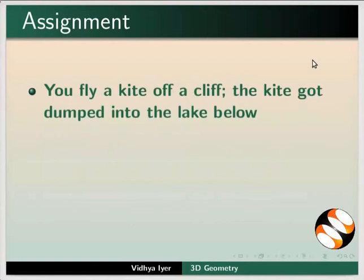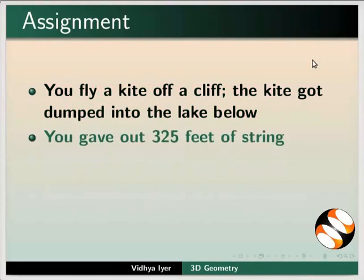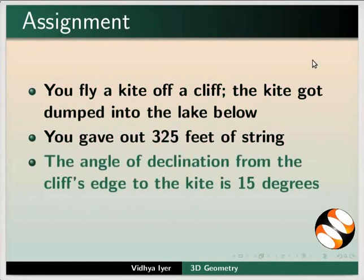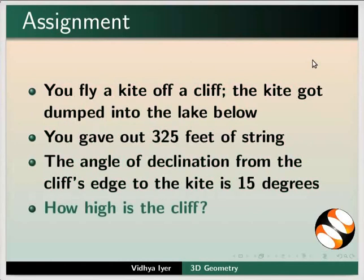As another assignment, you fly a kite off a cliff; the kite got dumped into the lake below. You gave out 325 feet of string. The angle of declination from where you stand at the cliff's edge to the kite is 15 degrees. How high is the cliff?